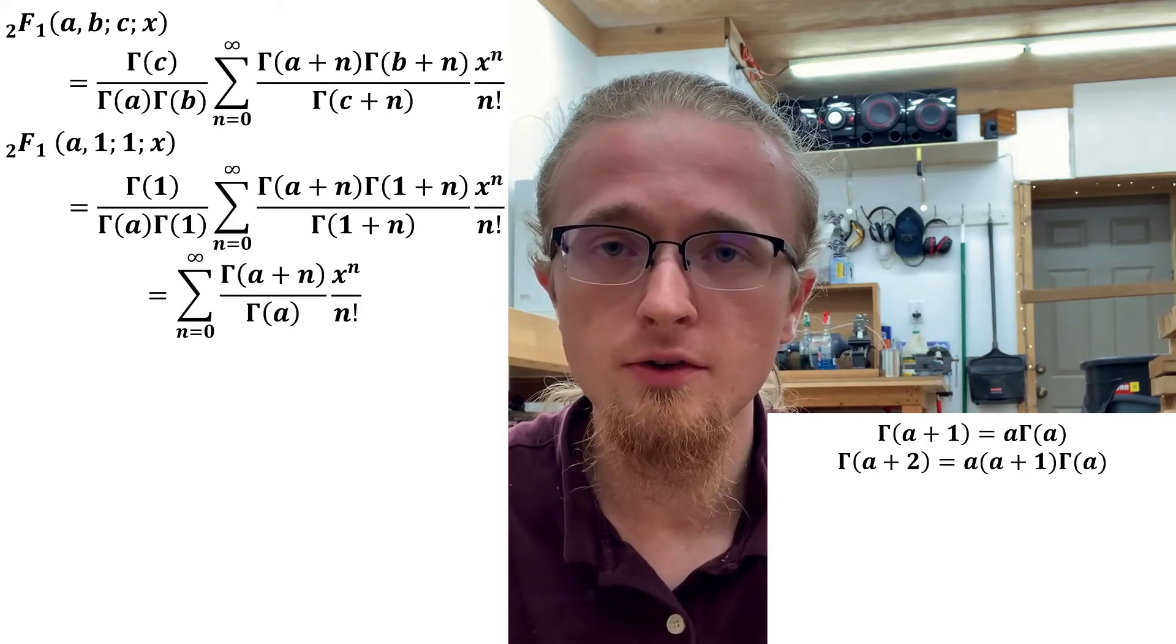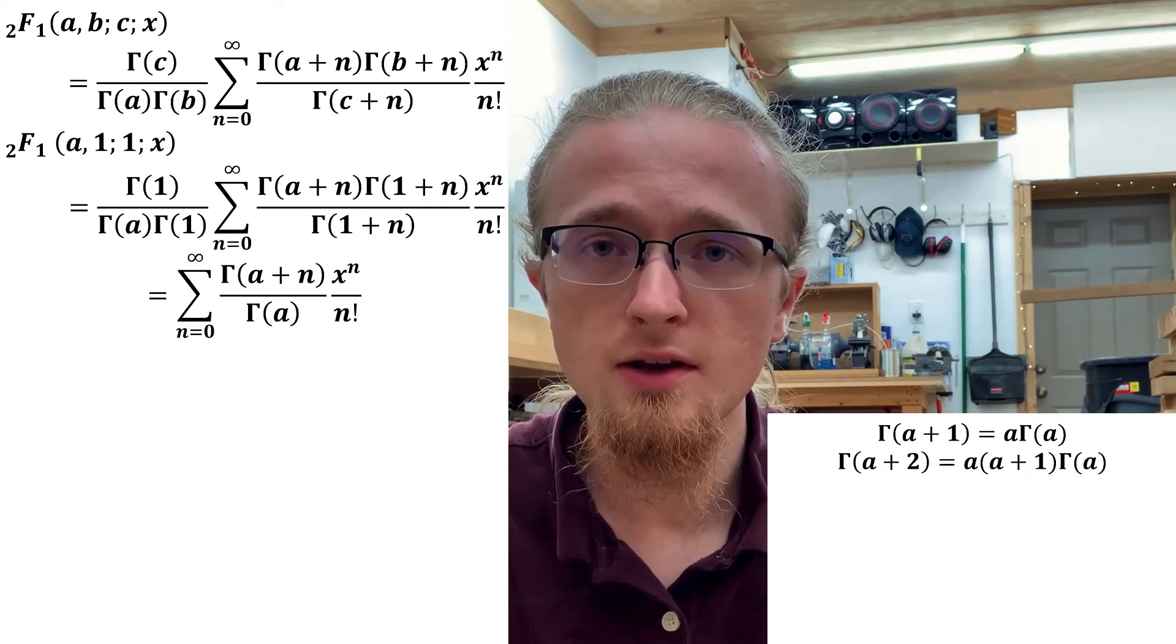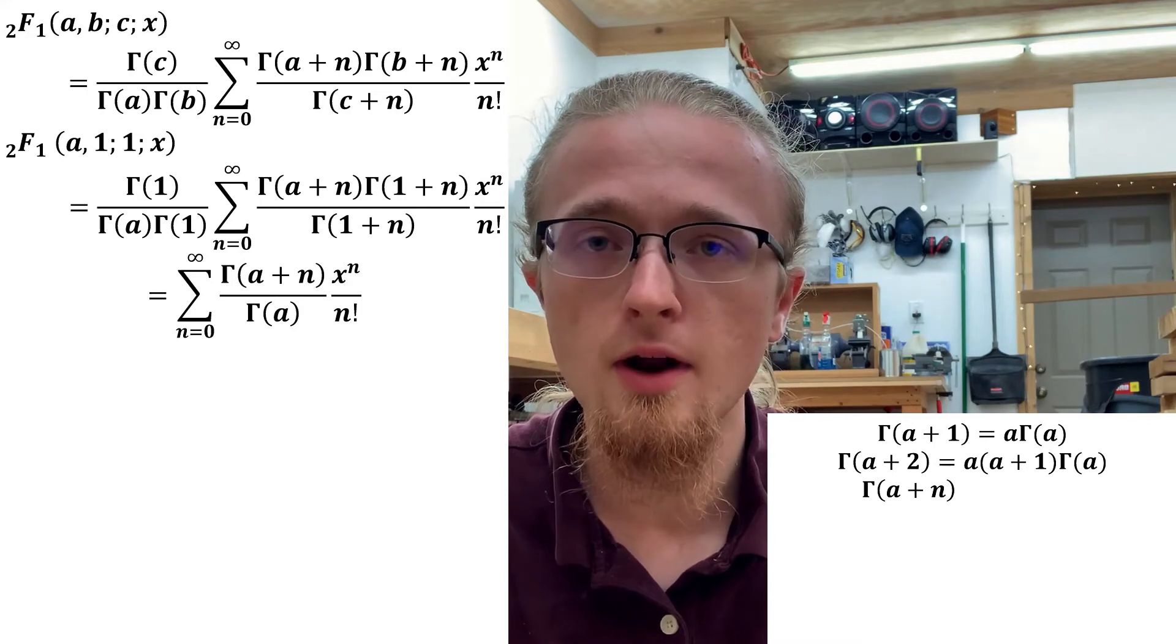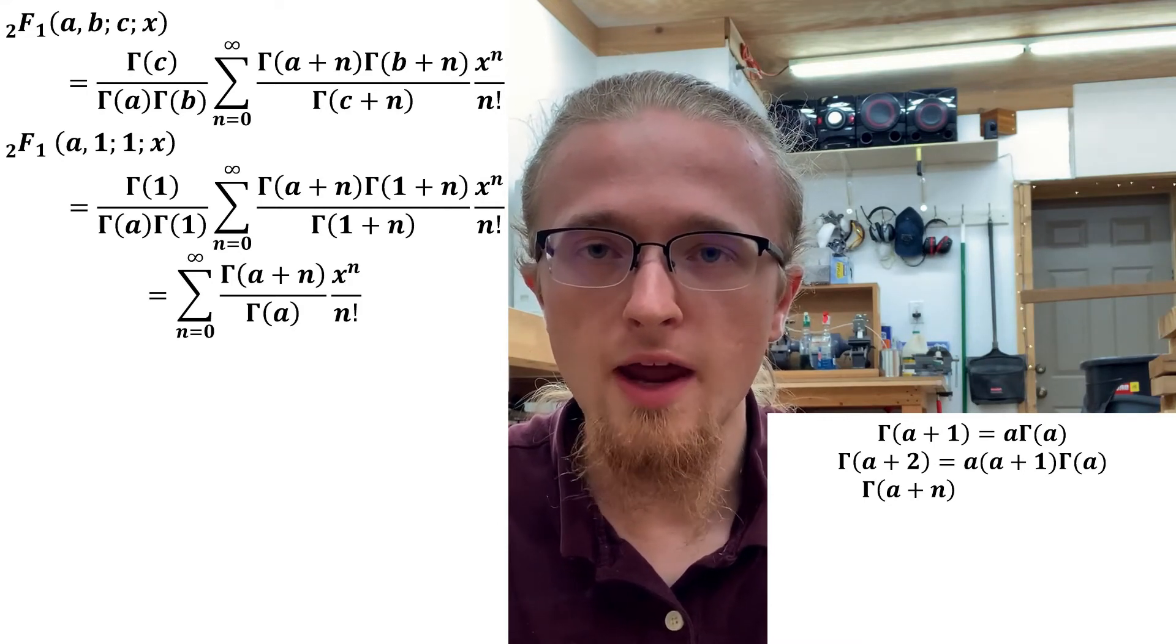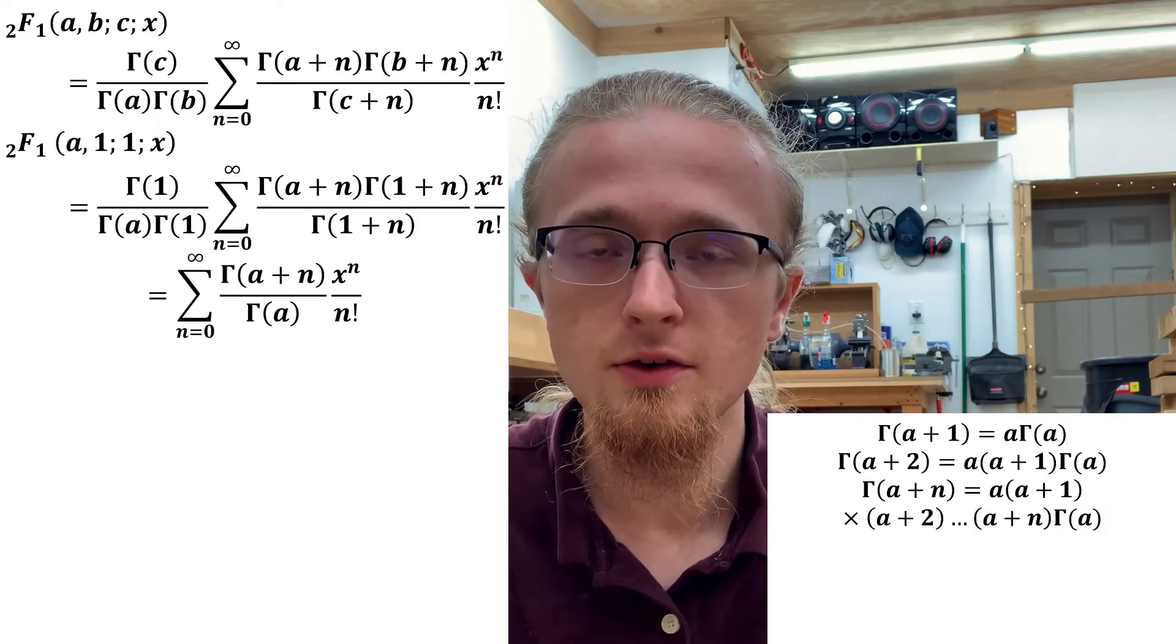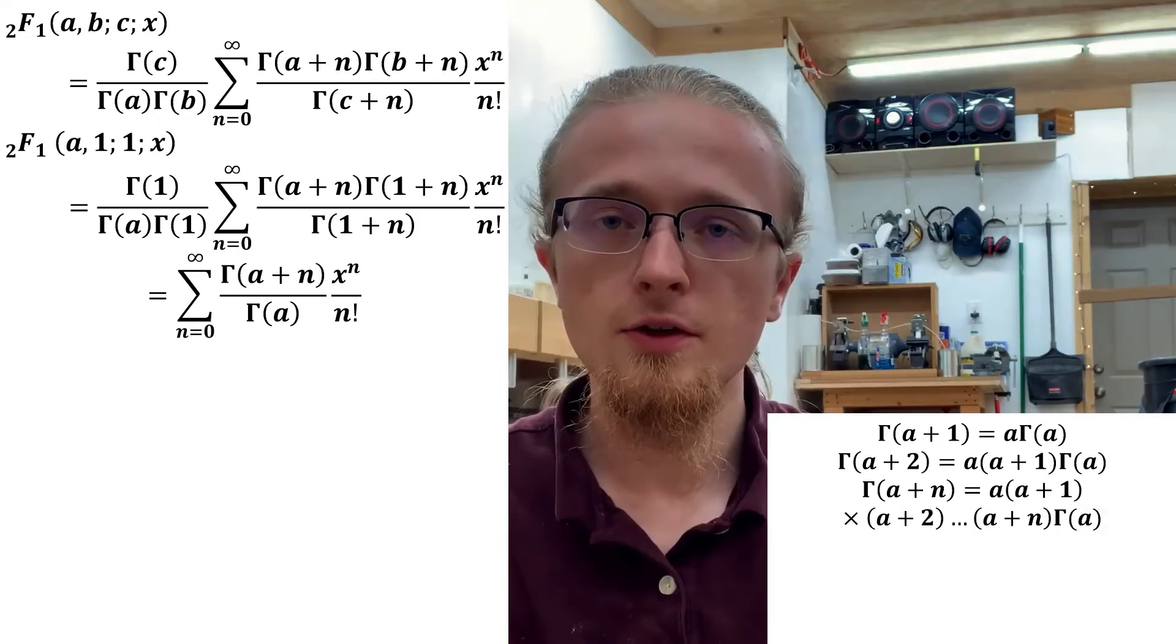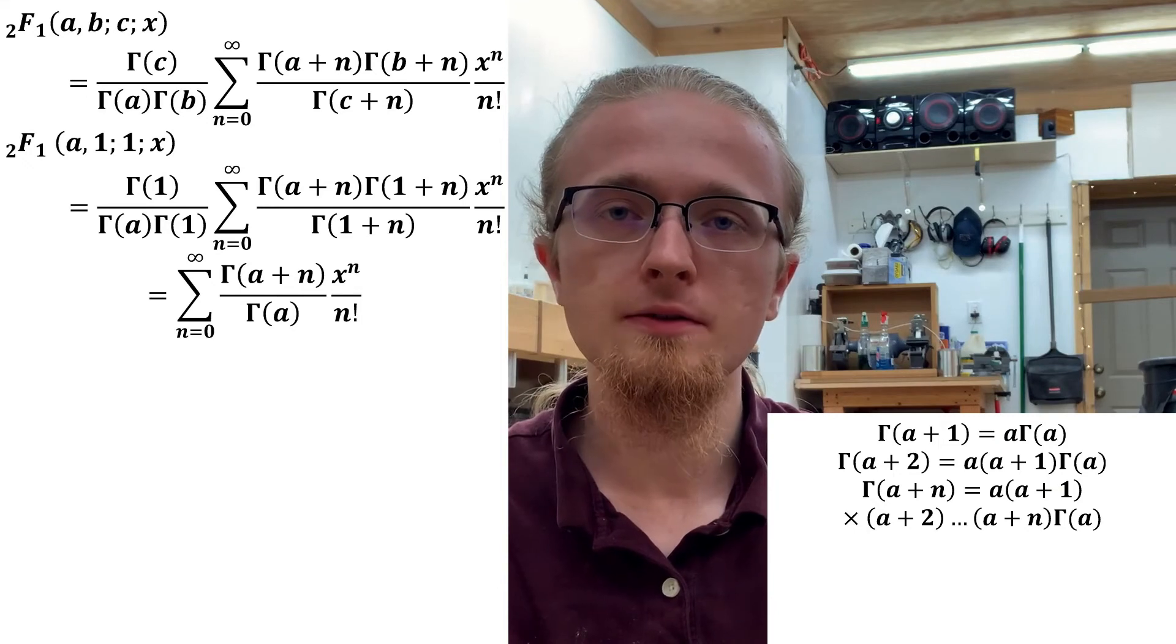At this point, you can probably see where this is going. We can now consider the case of Γ(a + n), where n is some positive integer. Applying the identity we just recalled n times to that gives us its expression in terms of Γ(a). This is the one that directly moves our efforts forward.